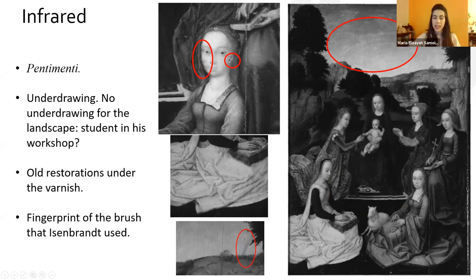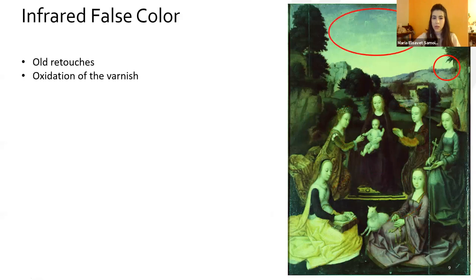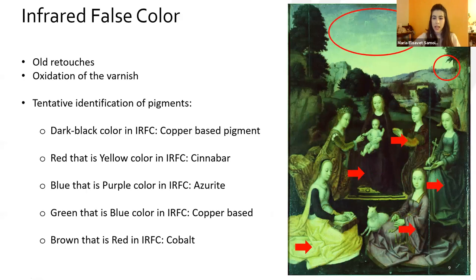In the infrared false color, we found again old retouches and the oxidation of the varnish, and we have a tentative identification of pigments — for example, a red color that appears yellow in the infrared false color may be cinnabar. To confirm this, we performed XRF analysis.